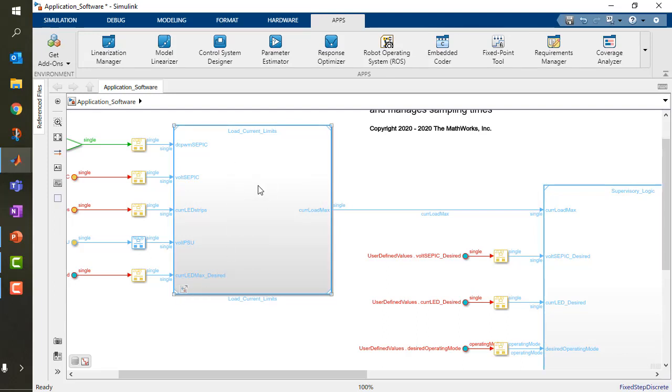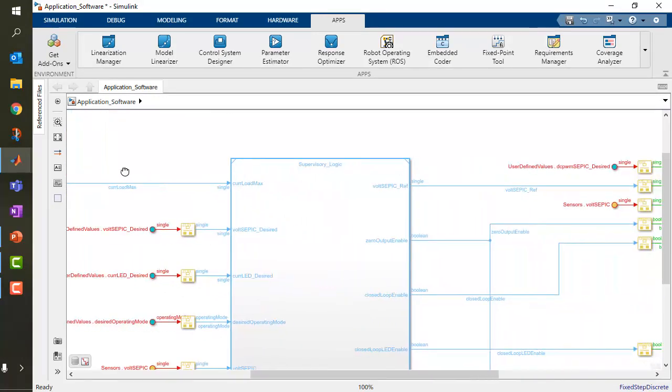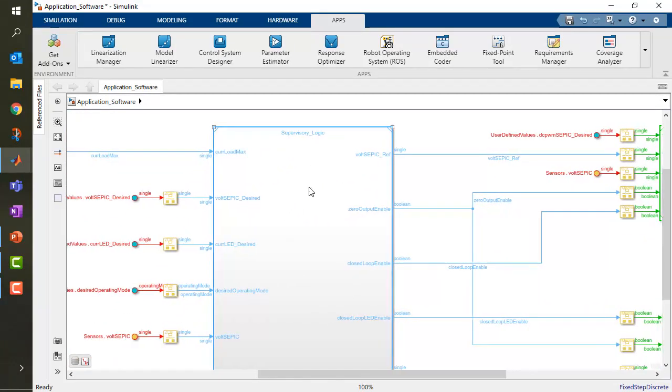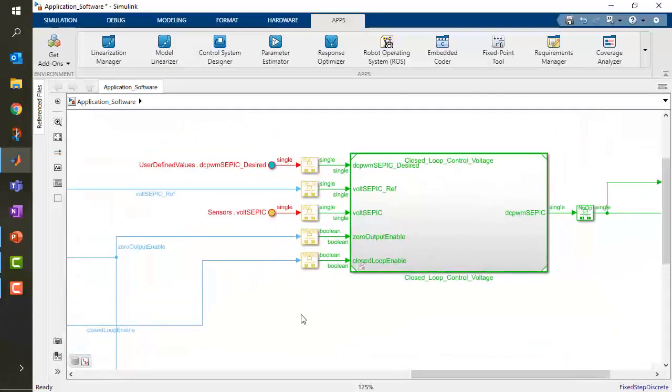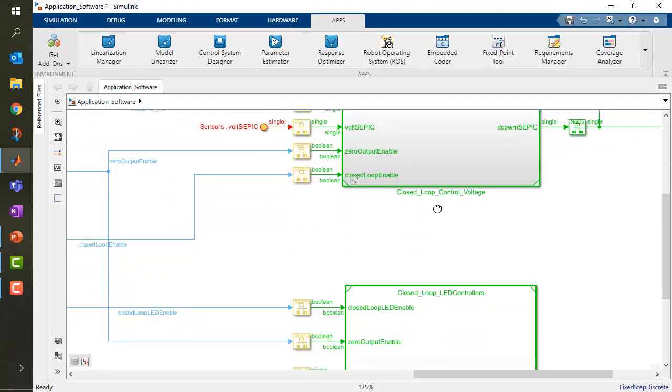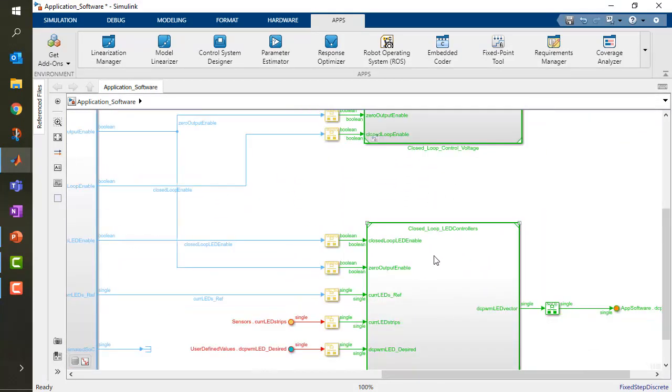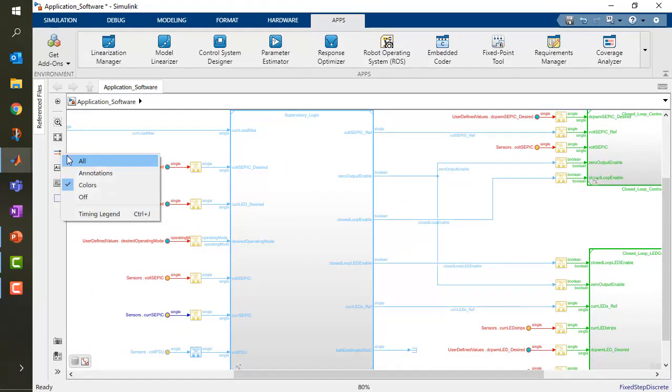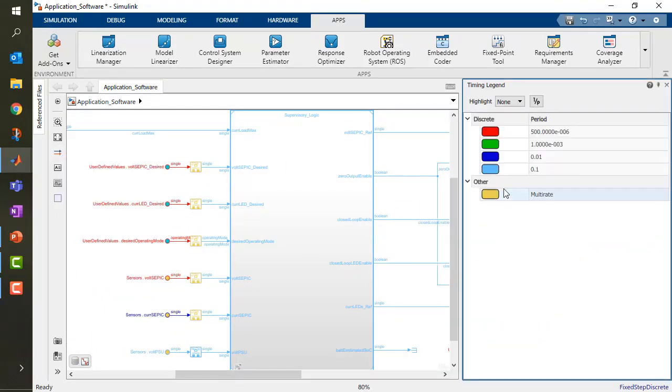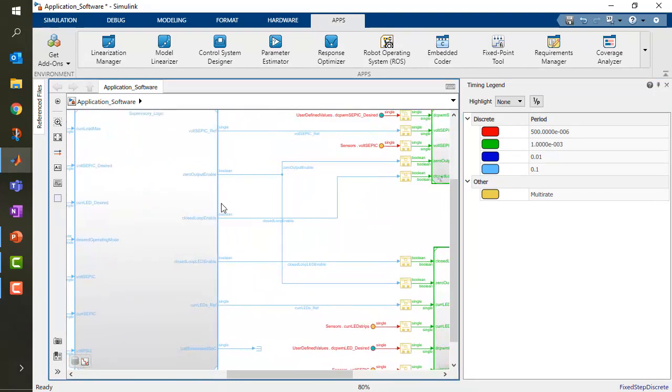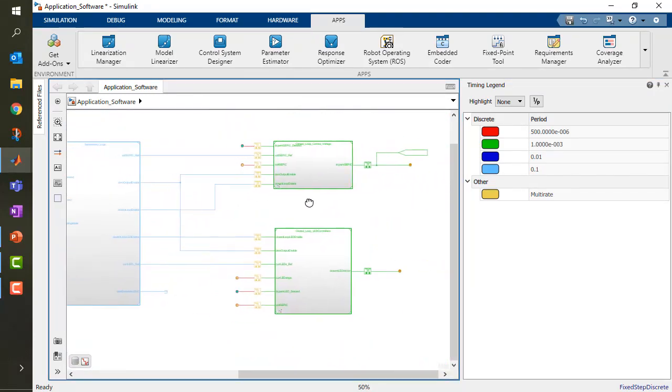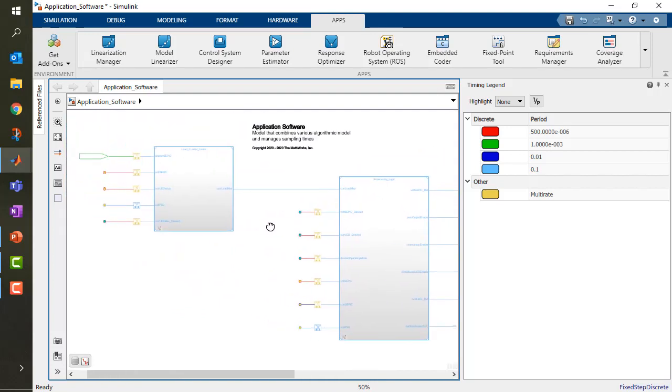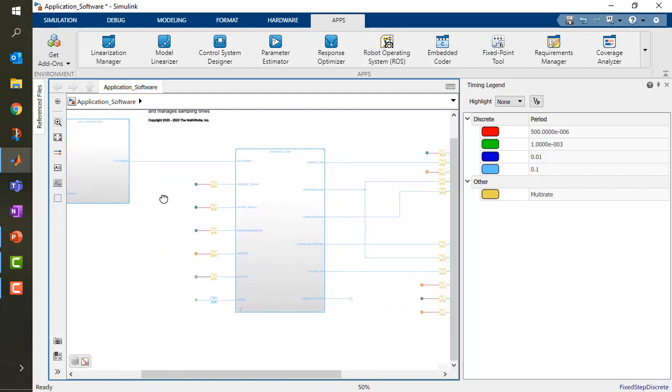I'm calling other models that implement certain algorithms, for instance some limits to my current, supervisory logic that we saw partially with the operating mode management in state flow, the closed loop control voltage, and the closed loop LED controllers. You can see different colors here. The colors are associated with a specific timing step so that we can already at a glance see which subsystem and different model are working at which rate and how they interact with one another.